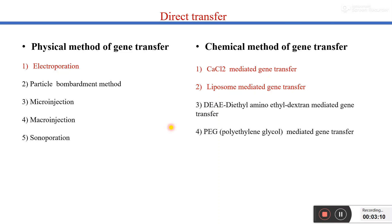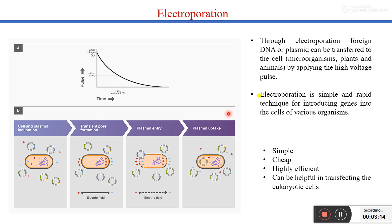Let's first discuss electroporation. Electroporation is the method of gene transfer in which we insert our gene of interest inside eukaryotic or prokaryotic cells by applying a very high voltage pulse across the cell membrane. In this process, we apply very high voltage for a short period of time — that pulse disturbs or destabilizes the plasma membrane integrity.